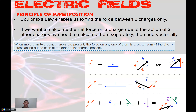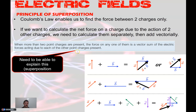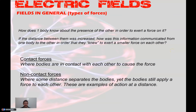The principle of superposition is another important feature. Coulomb's law only tells us the force between two charges, but if we have three or four charges and want to know the total force acting on one object, we need superposition. We calculate each force separately and then add them vectorially. The principle states: when more than two point charges are present, the force on any one is the vector sum of the electric forces due to each of the other point charges present.